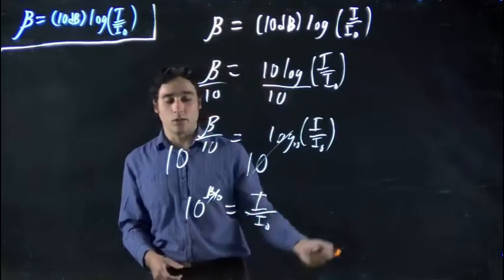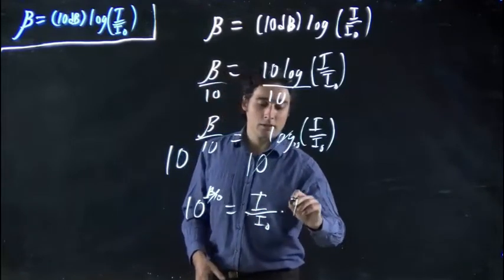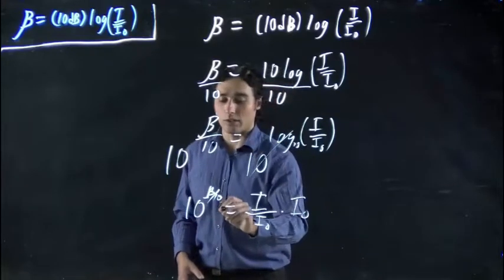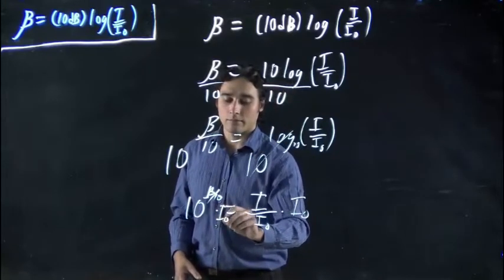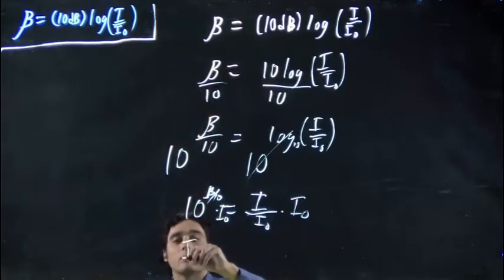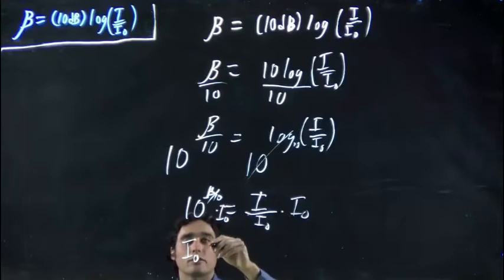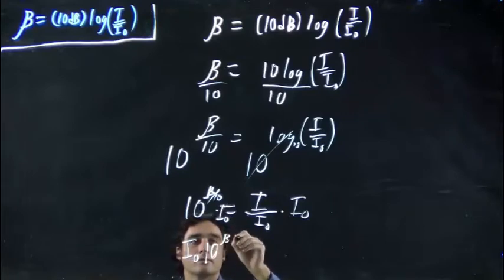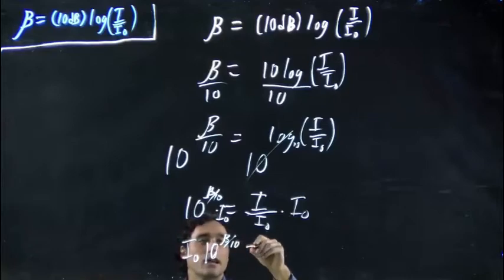Want to get I on its own? I'll multiply both sides by I₀. Same basic tricks we've been using this whole time. So if I want, I can reorder this just to clean it up. Remember, it doesn't matter if I put I₀ after or in front, I'm putting it in front just to make it look nicer. And that's all equal to I, the intensity.